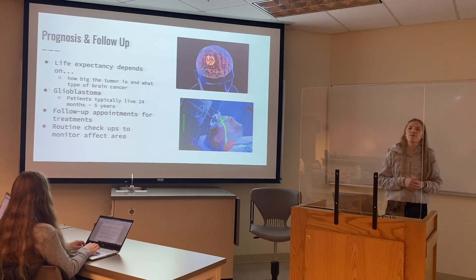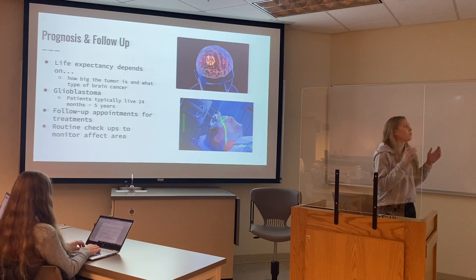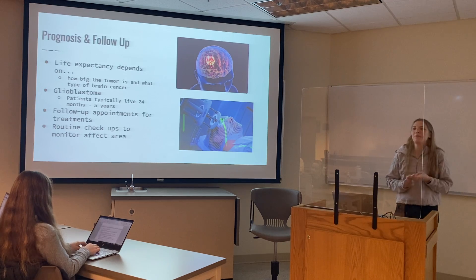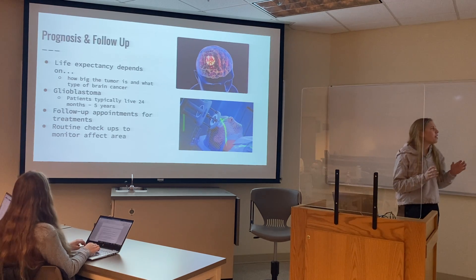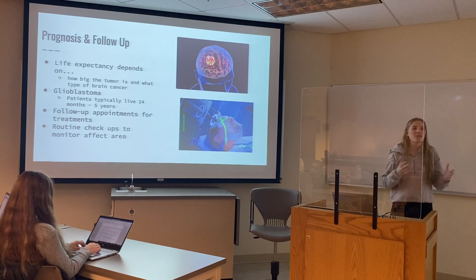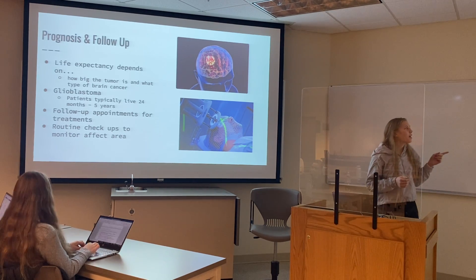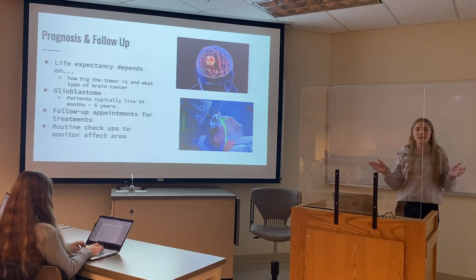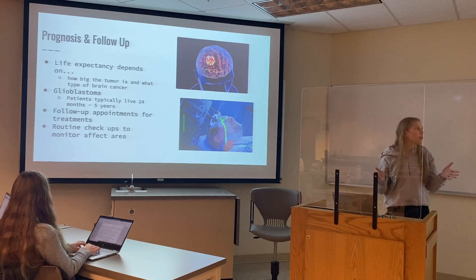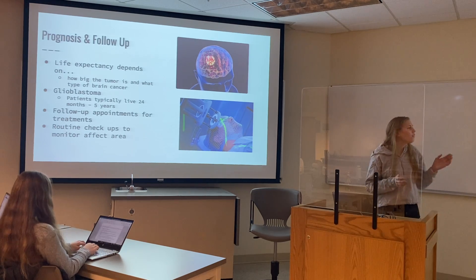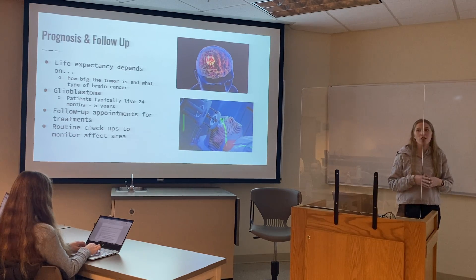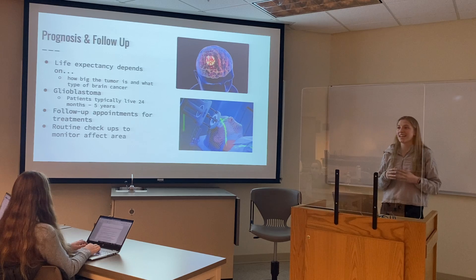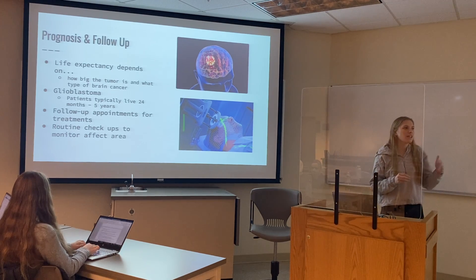For prognosis and follow-up, it really depends on when the tumor was detected, how far along it was, and how big and what type it is — so there are a lot of factors. It can be pretty positive if we can remove it all with surgery or other treatments. Glioblastoma is the most harmful type of brain cancer; typically you're looking at 24 months to 5 years of life expectancy after diagnosis. Your relative is going to need to come to many follow-up appointments and treatments, with routine checkups and screenings to make sure the cancer does not come back or can be contained at a controlled level.